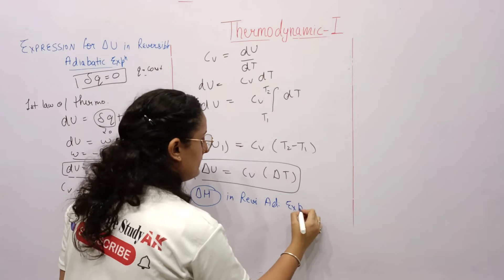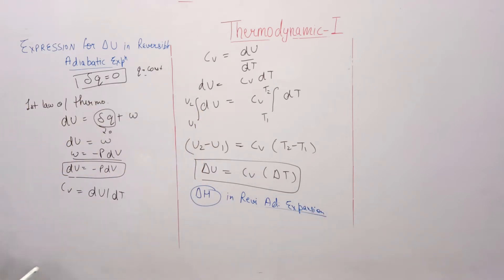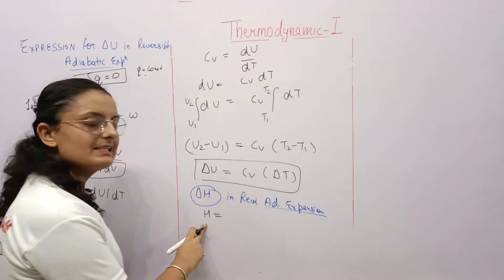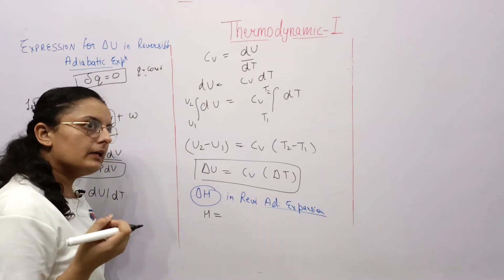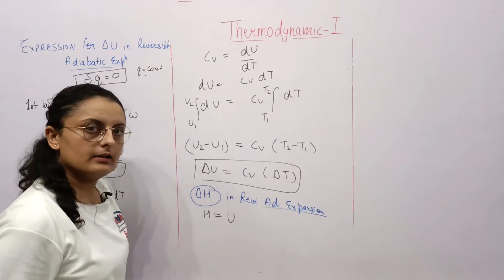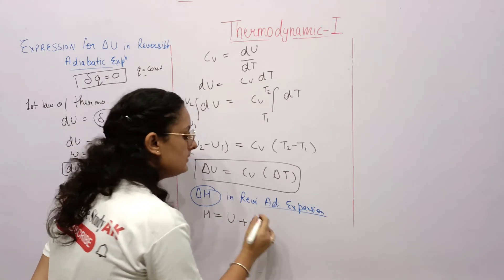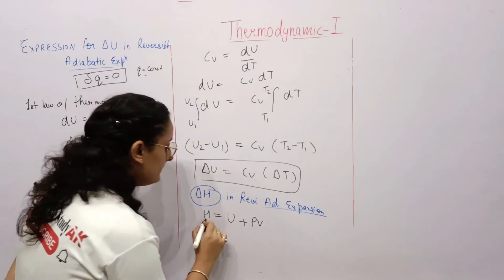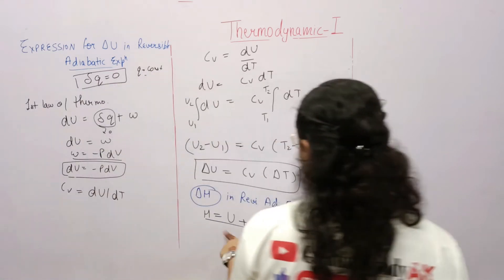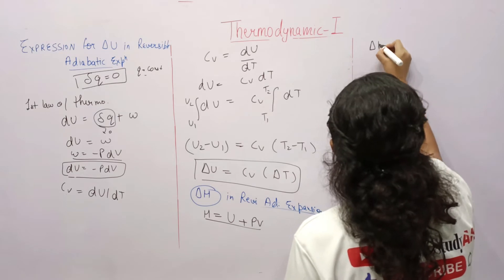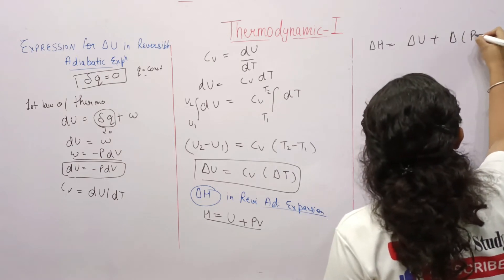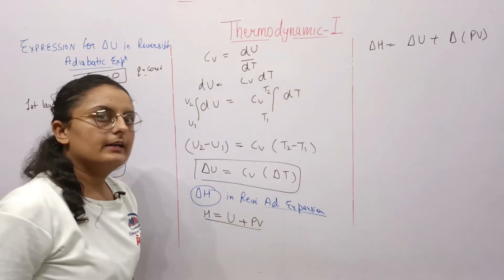Now for the second derivation: delta H in adiabatic expansion. The definition of enthalpy is H = U + PV — internal energy plus the product of pressure and volume. Differentiating: dH = dU + d(PV).